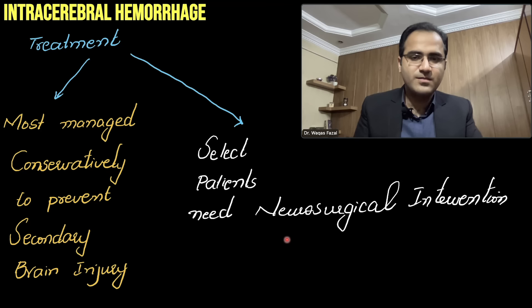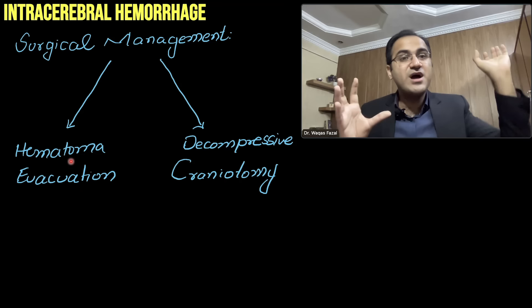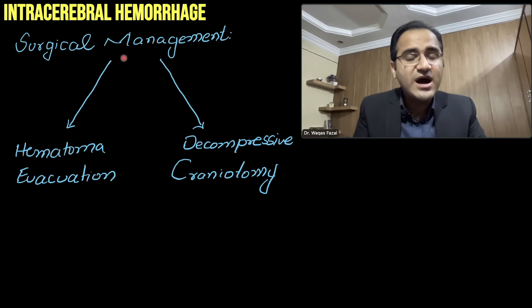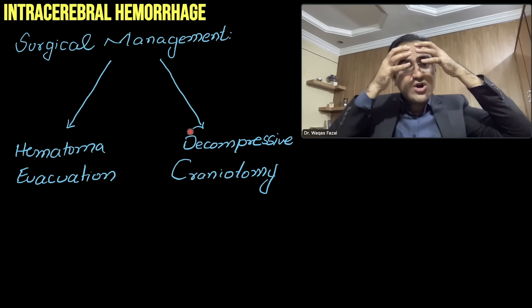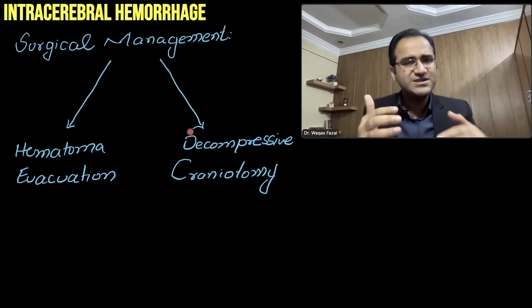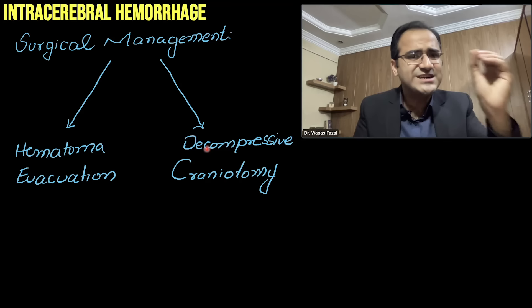A selected group of patients may need neurosurgical interventions. These include hematoma evacuation — opening the skull and removing the blood from the brain — and decompressive craniotomy, in which part of the cranium is removed to relieve rising intracranial pressure. Decompressive craniotomy can be combined with hematoma evacuation in selected patients.